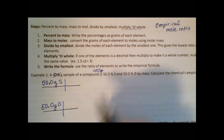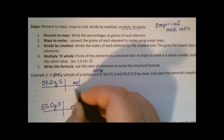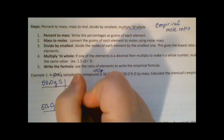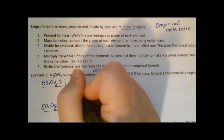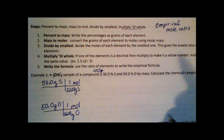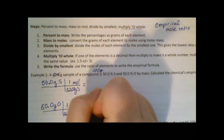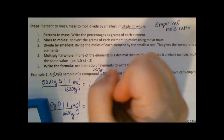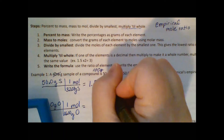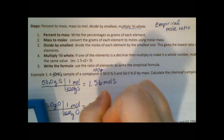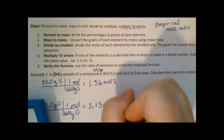To convert grams to moles, we use molar mass. The molar mass of sulfur is 32.07 g/mol and oxygen is 16.00 g/mol. Calculating: 50 divided by 32.07 gives 1.56 moles of sulfur; 50 divided by 16 gives 3.13 moles of oxygen. We've done percent to mass and mass to moles.